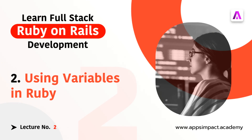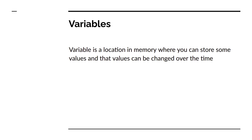Hey guys, welcome back. This is the second video of our Ruby on Rails bootcamp series, and in this video we are going to discuss variables in Ruby. Before knowing variables in Ruby, we first need to know what variables are in general. Mathematically, a variable can have a value and that value can be changed over time. But programmatically, a variable is a location in memory where you can store some values, and that value can be changed over time.